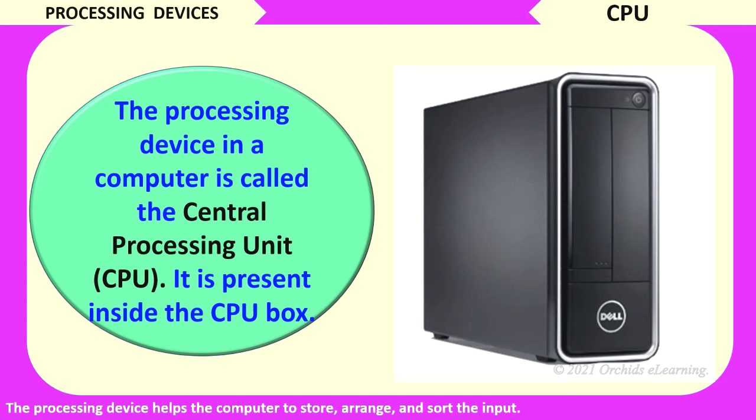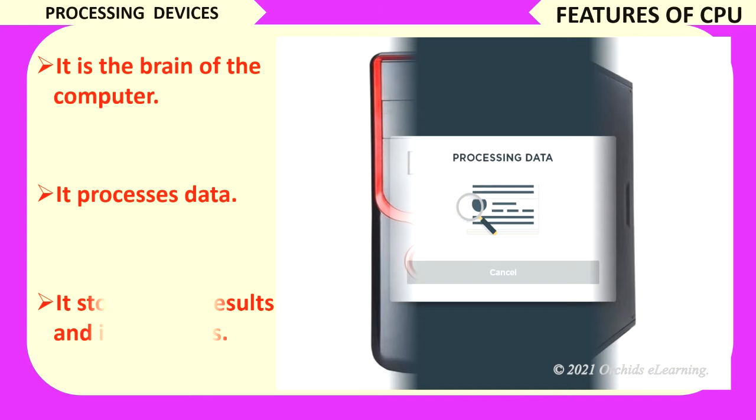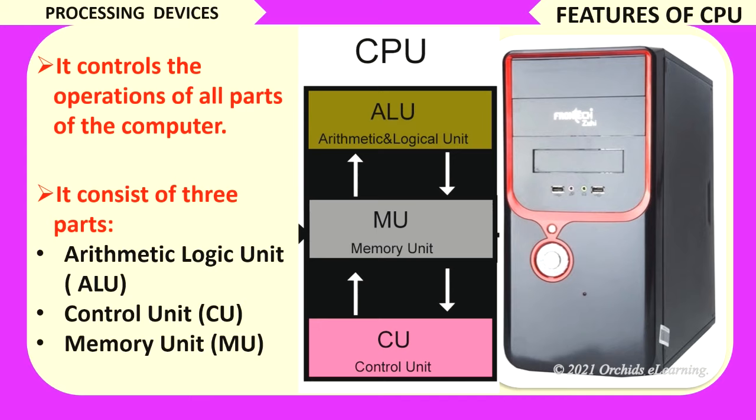Let us see the features of CPU. It is the brain of the computer. It processes data. It stores data, results, and instructions. It controls the operations of all parts of the computer. It consists of three parts: arithmetic logic unit, control unit, and memory unit.